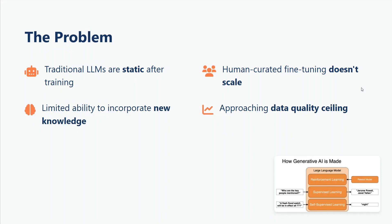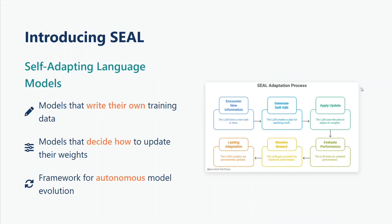LLMs have a limited ability to incorporate new knowledge and are approaching a data quality ceiling. But with self-adaptive language models — SEAL — you can update your LLMs very regularly, bypassing traditional fine-tuning completely. These models can write their own training datasets, decide how to update their weights, and provide a framework for autonomous model evolution. You just provide the new context and the rest is handled by the SEAL framework.